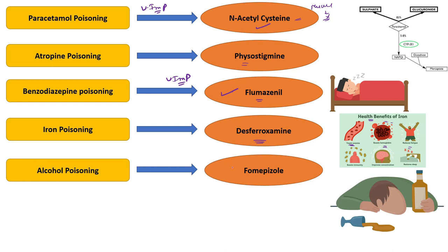The drug of choice for alcohol poisoning — specifically methanol poisoning — is fomepizole. For methanol poisoning, the drug of choice is fomepizole.